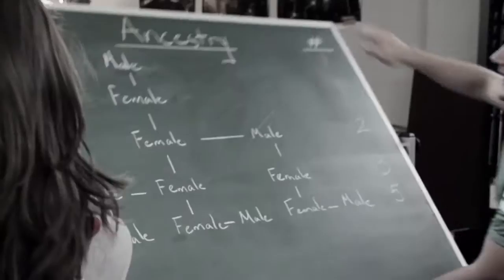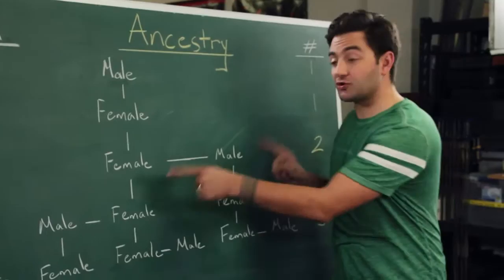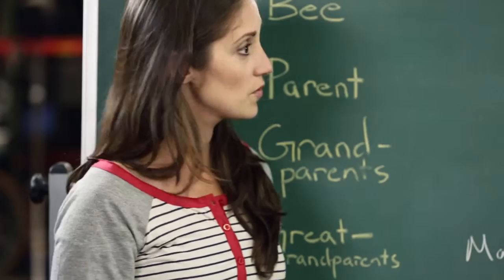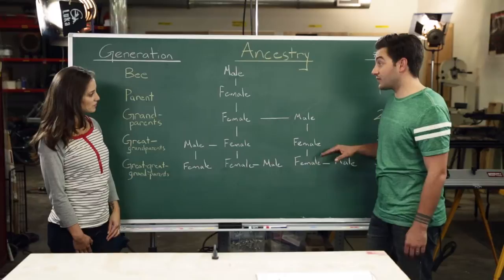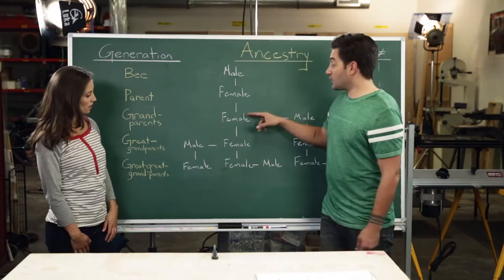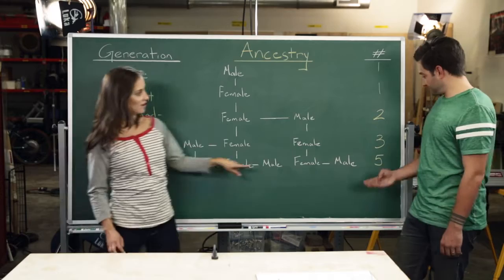Yes, nature. Let me show you my favorite example — bee ancestry. A female honeybee has two parents, but a male honeybee only has one parent. So the sequence is: one male, one female parent, two grandparents. And then taking it back another generation: a male with one parent, a female with two parents — three grandparents. The two females both have two parents and one male with one parent is five grandparents. That's the Fibonacci sequence — one, one, two, three, five.